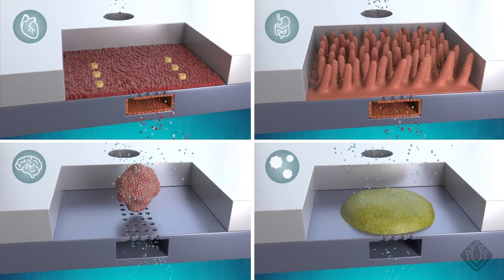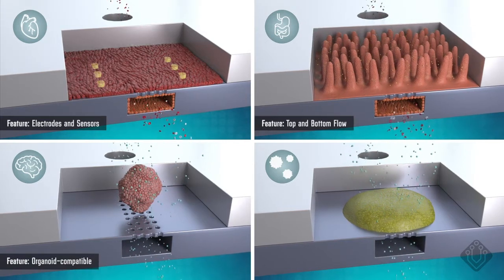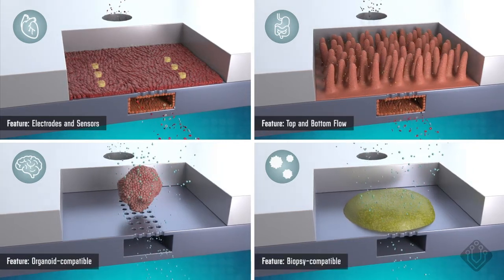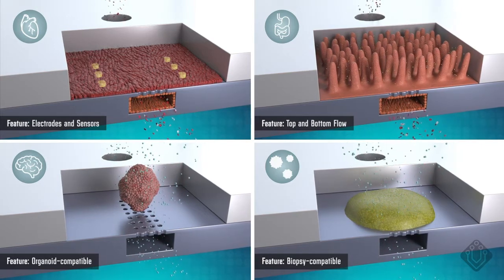The chip supports a wide range of cell types and configurations, including organoids. These models can be integrated on a single chip to create a connected system that offers a holistic approach to disease modelling.